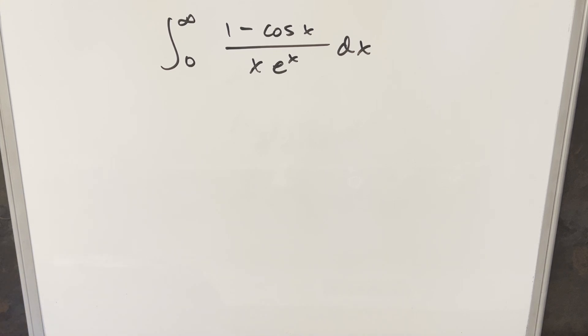Okay, we have a really interesting integral. We've got the integral from zero to infinity, 1 minus cosine x over x times e to the x dx.